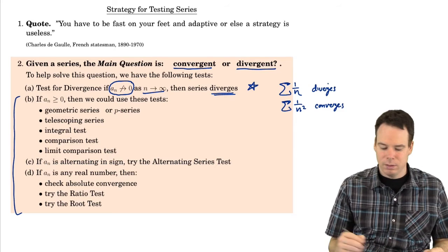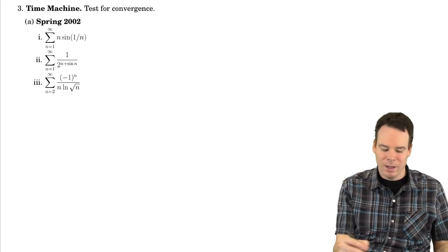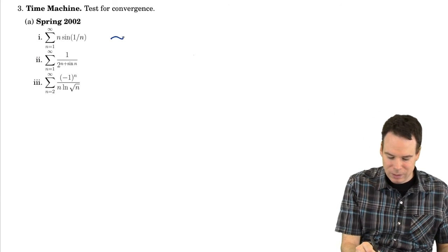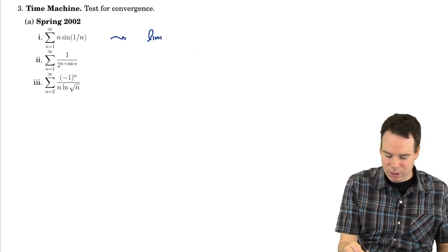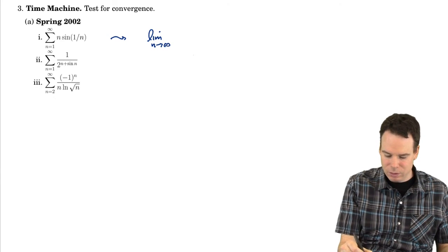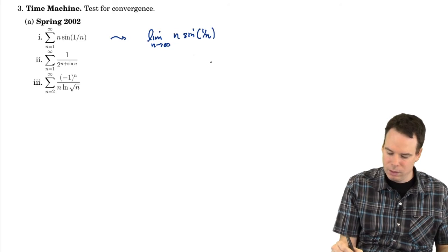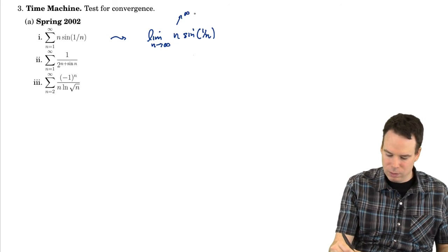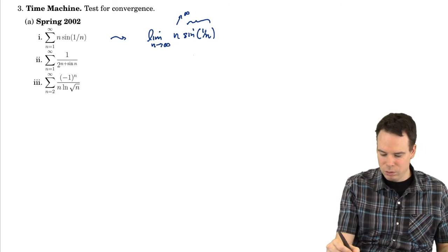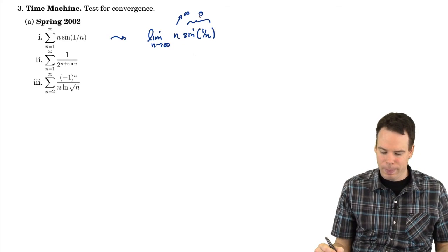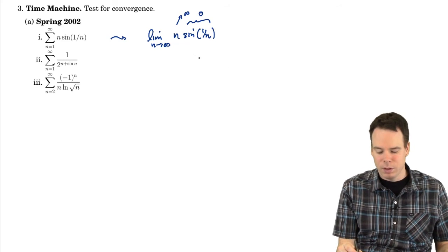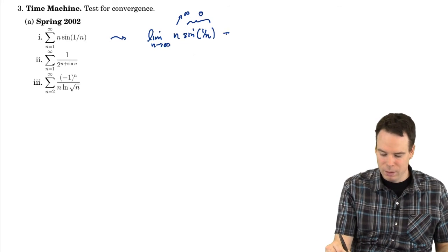So let's have a look at the first few examples. In this first example, the very first thing we should do is look at what the terms do. As n goes to infinity, we've got n times sine of 1 over n. So that first thing is going to infinity. The second thing, as n goes to infinity, is going to zero. So this looks like we're going to have to apply L'Hôpital's rule.